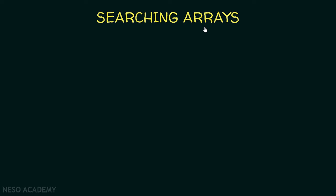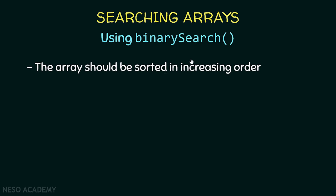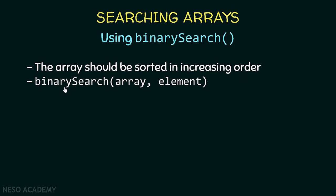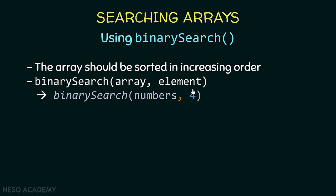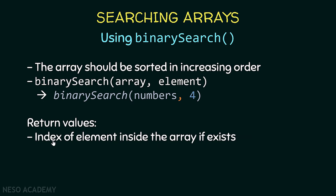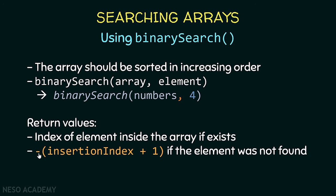Now let's talk about searching arrays. Suppose we have an array and we want to search for an element. We will use the binarySearch method of the arrays class. First, to use the binarySearch method, the array should be sorted in an increasing order — we now know how to sort using the sort method. We give binarySearch the array and the element we are looking for. It returns the index of the element if it exists in the array, or the negative value of the insertion index plus one if the element was not found.